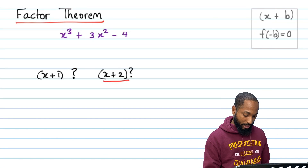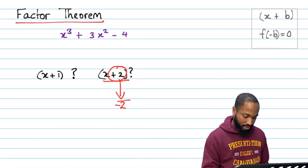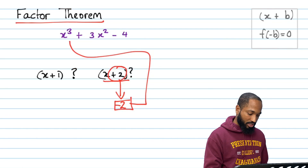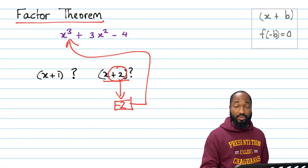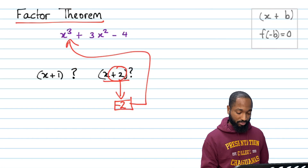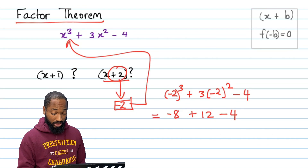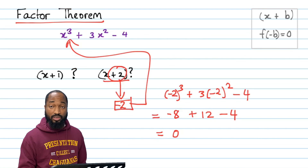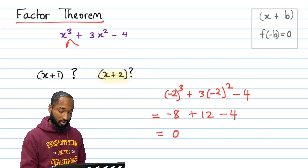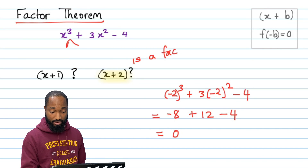To check if something is a factor, change the sign and take that number, then substitute negative 2 into the original expression. If it boils down to zero, that means this original expression is indeed a factor.